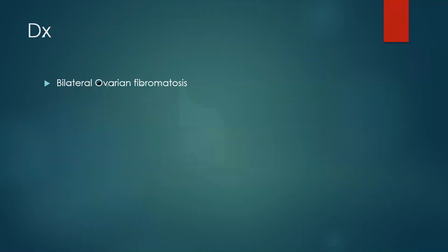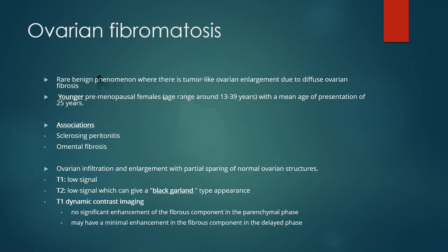These lesions were bilateral ovarian fibromatosis. It is a rare benign phenomenon where there is tumor-like ovarian enlargement. It is not a neoplastic process. It usually affects younger premenopausal patients, with a mean age of presentation of about 25 years. It has a strong association with sclerosing peritonitis as well as omental fibrosis. On MRI, these lesions carry a characteristic appearance with low T1 and T2 signal intensity and a special sign called the black garland sign. In dynamic post-contrast enhancement, it shows the typical features of a fibrous lesion with slow progressive enhancement and retention of contrast.